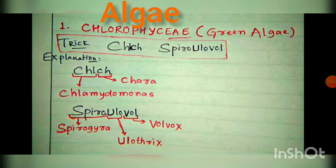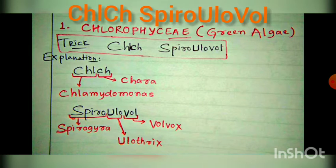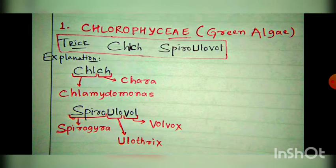Hello guys, today we will learn the tricks of phylum algae. First we start with Chlorophyceae, that is green algae. The trick is 'clutch spirohulo valve' — if you repeat it for some days you can keep that in mind easily.